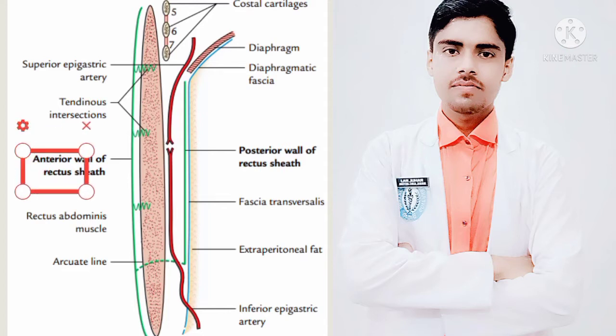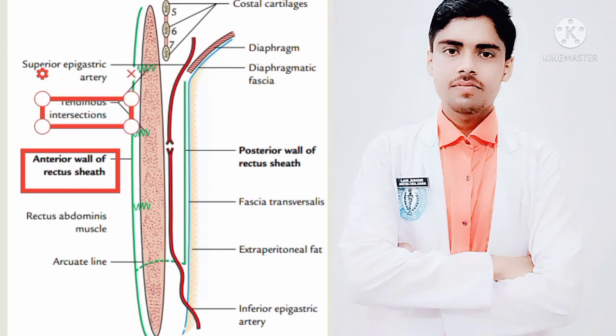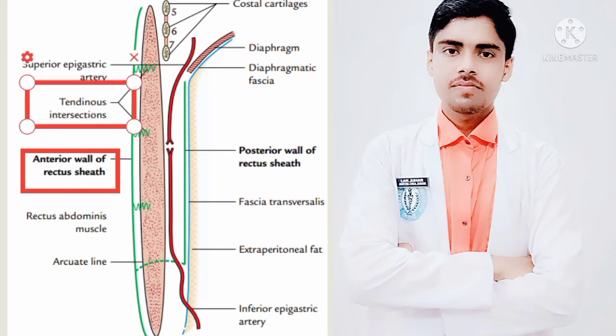As you can see in the figure, this is the anterior wall of the rectus sheath. It completely covers the muscle from end to end and is firmly adherent to the tendinous intersections of the rectus muscle. As you can see in the figure, this is the tendinous intersection of the rectus abdominis muscle through which the rectus sheath is firmly adherent.